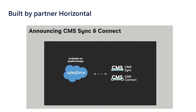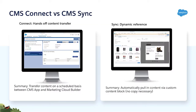Let's see how. With CMS Connect, admins can now integrate multiple business units and leverage a hands-off content transfer. Users can simply download this from AppExchange and then transfer content on a scheduled basis between the CMS app and Marketing Cloud Builder. The app will periodically copy over content from CMS to Marketing Cloud libraries, and it's applicable to all content types.